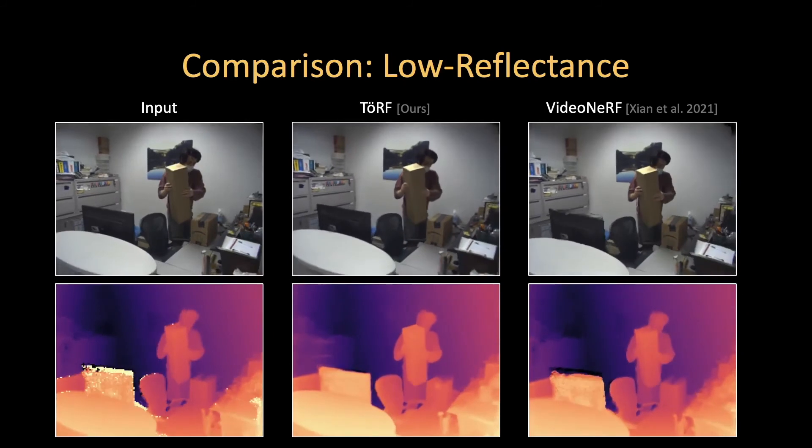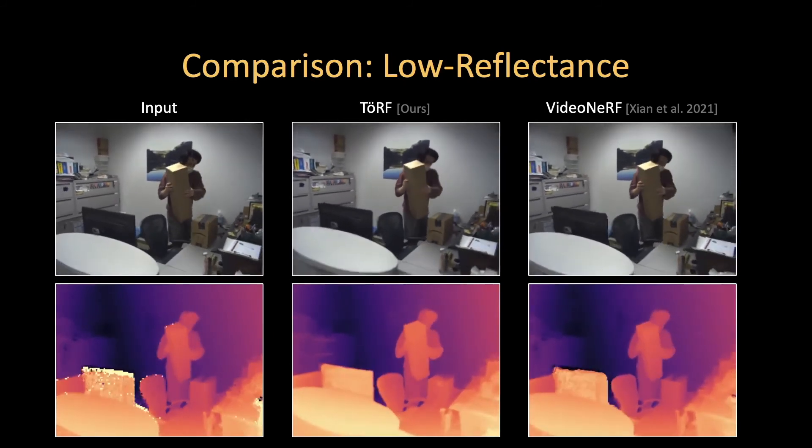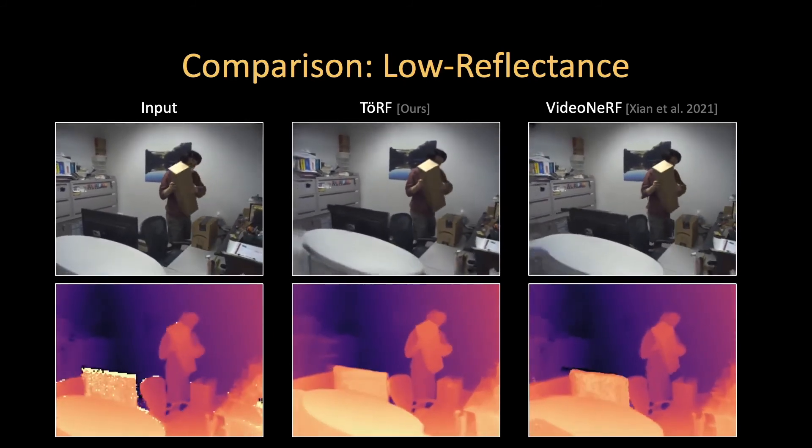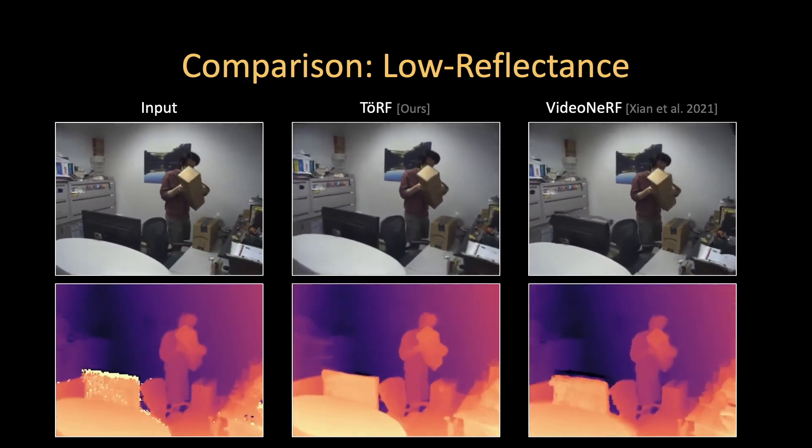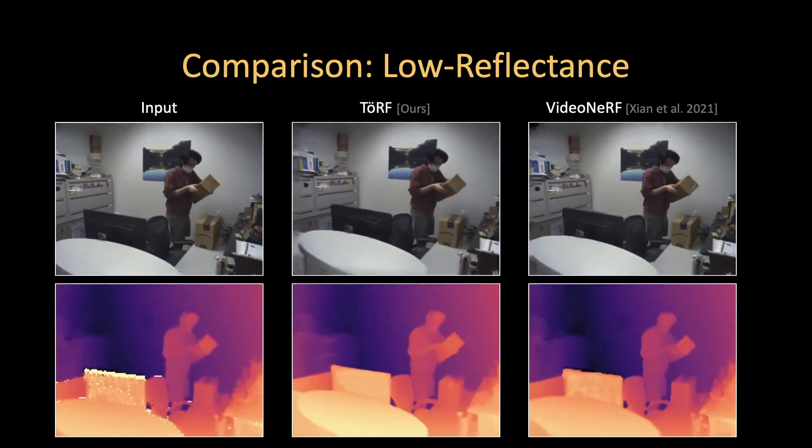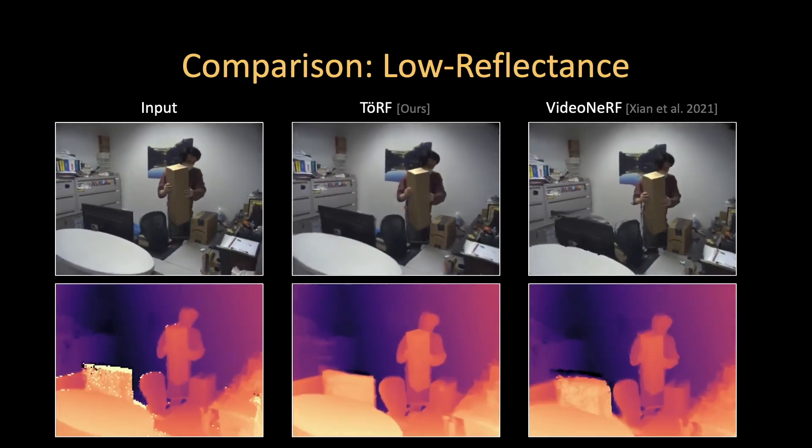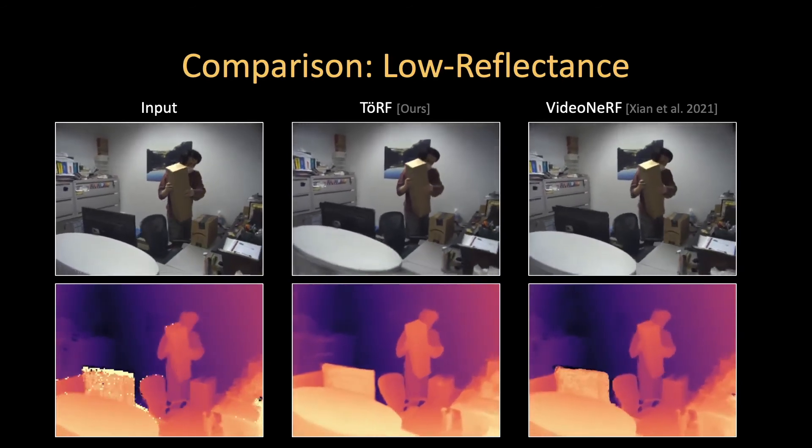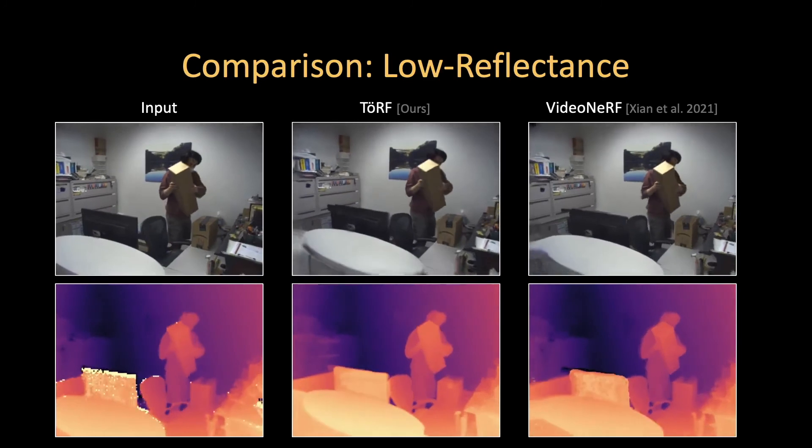We also modify these dynamic view synthesis methods to use depth derived directly from a continuous wave time-of-flight camera. We are better able to recover the geometry for static, low-reflectance regions than these modified baselines. Compare, for example, the depth of the dark monitor produced by TERF and the depth produced by the baseline method.